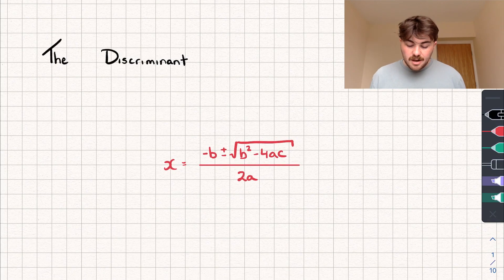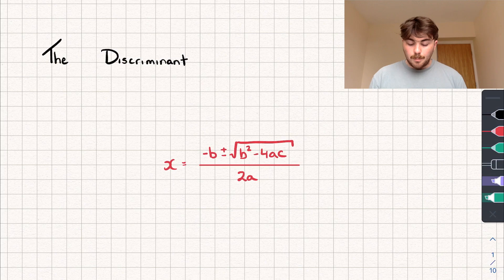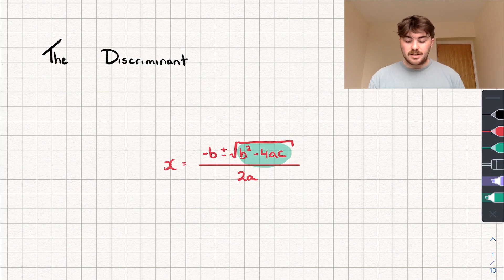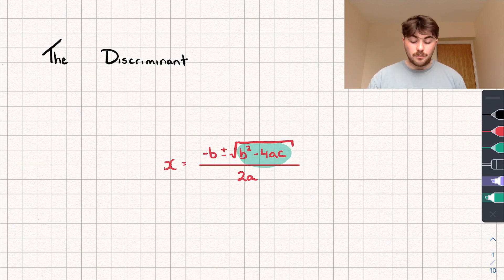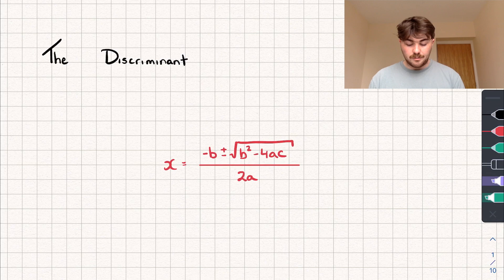You can see here in red I've written down the quadratic formula, and a part of this formula is so useful to us that it gets its own name. The part of the formula is this bit inside of the square root — b squared minus 4ac — and we call this part of the formula the discriminant. It's so useful to us because it allows us to see how many roots or how many solutions our quadratic equation is going to have, and it's actually pretty easy to see why that's the case.